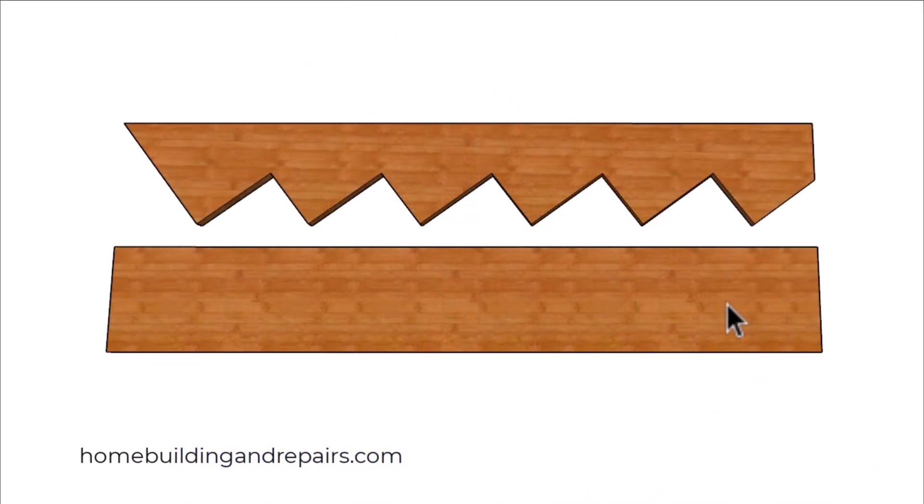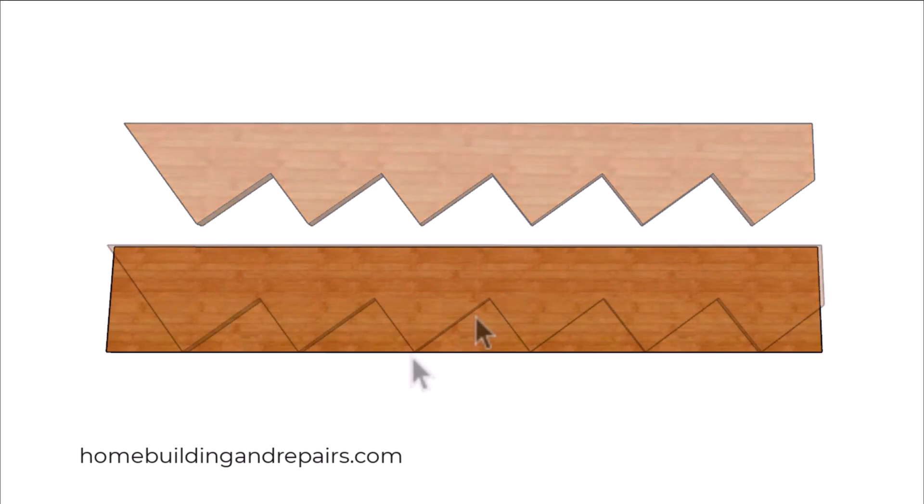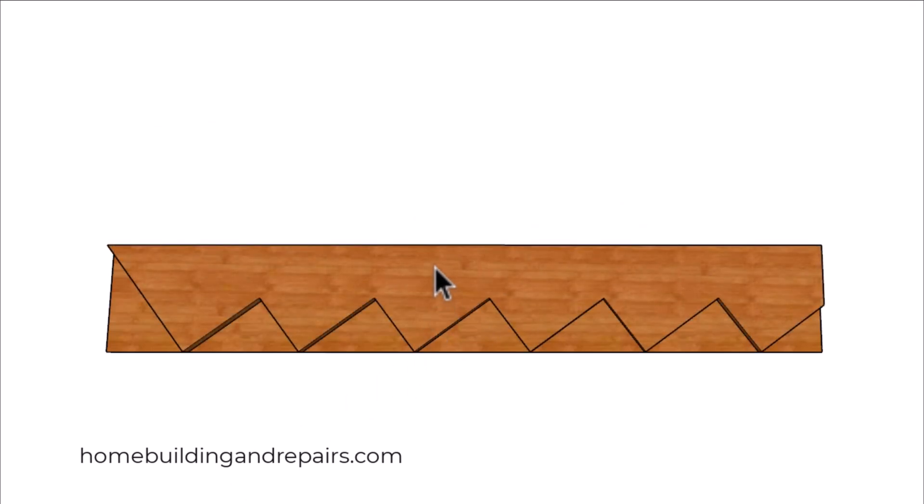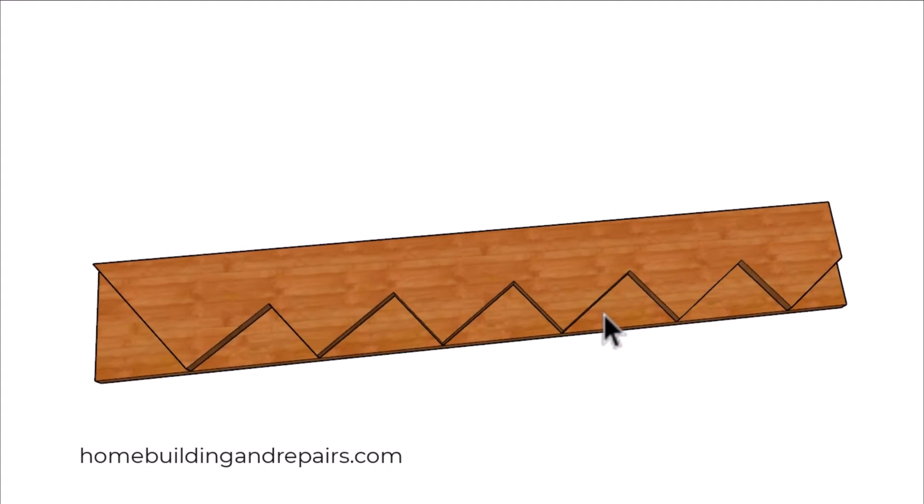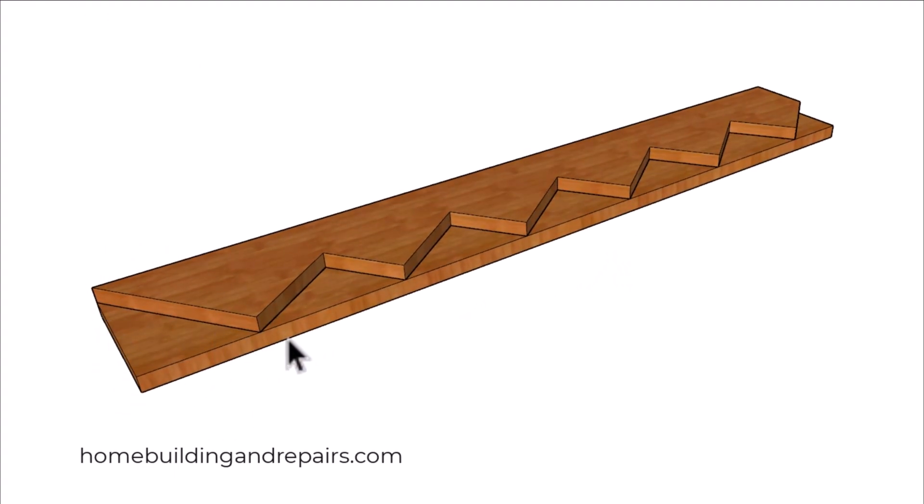If all you can get, for example, is an 8 foot long board, then you can simply lay it out and modify it if you need to at the bottom or the top. You can usually lay out one pattern, something like this, and simply set it on top of the next board and then trace it with a pencil. I prefer using this method because it's going to allow each one of the stair stringers to be the same, even if you made a slight mistake.